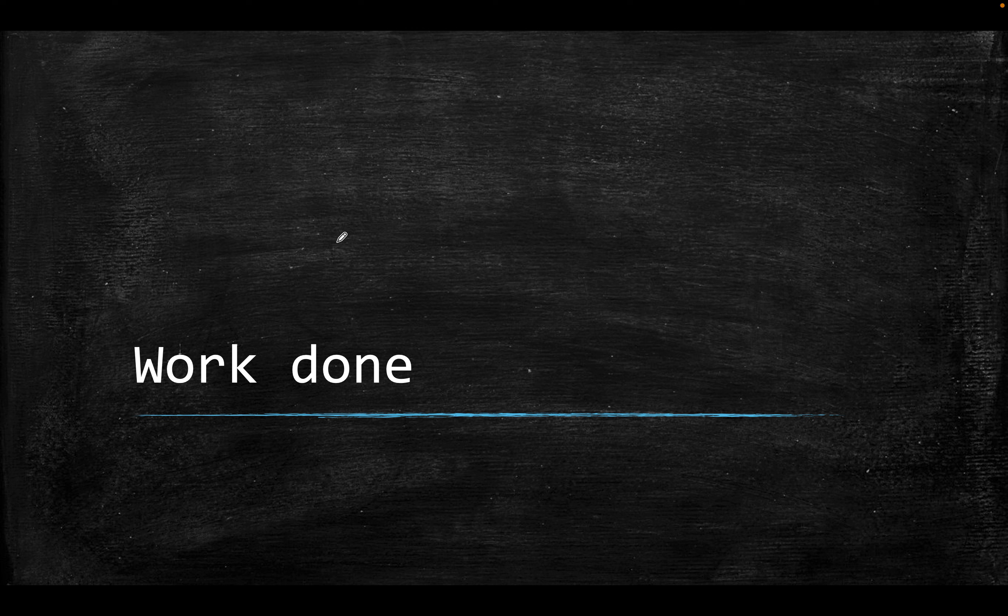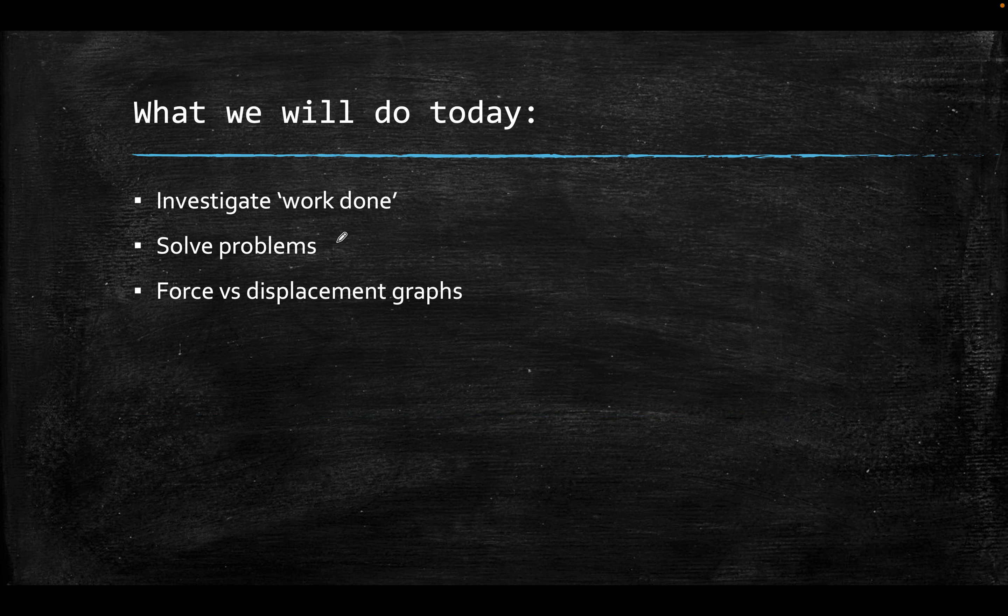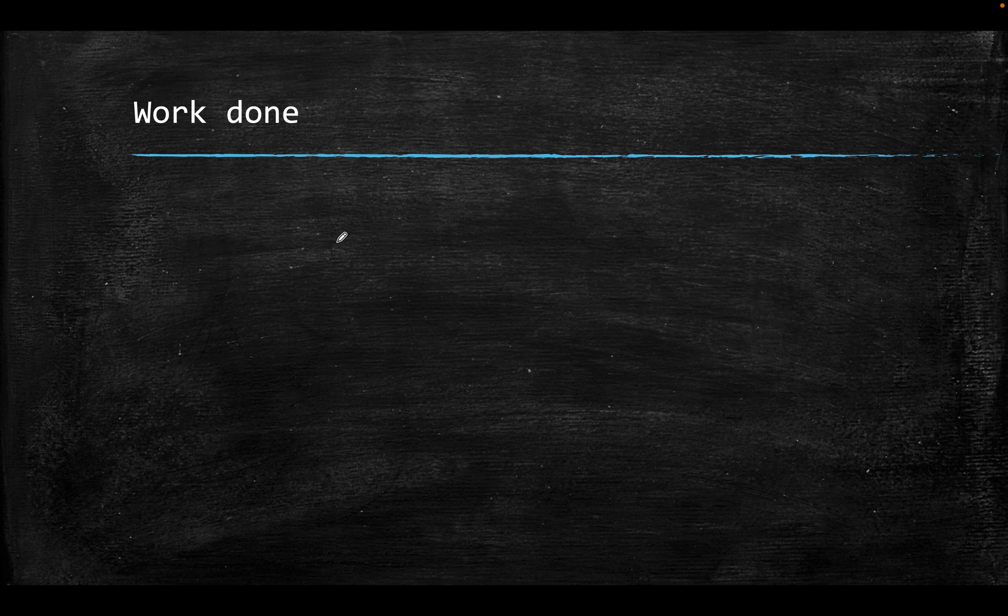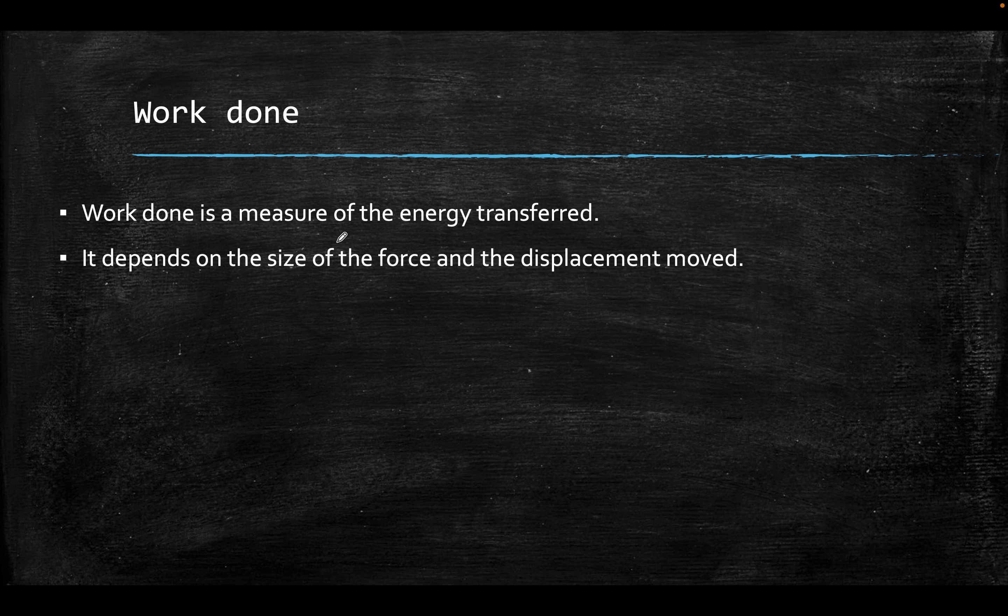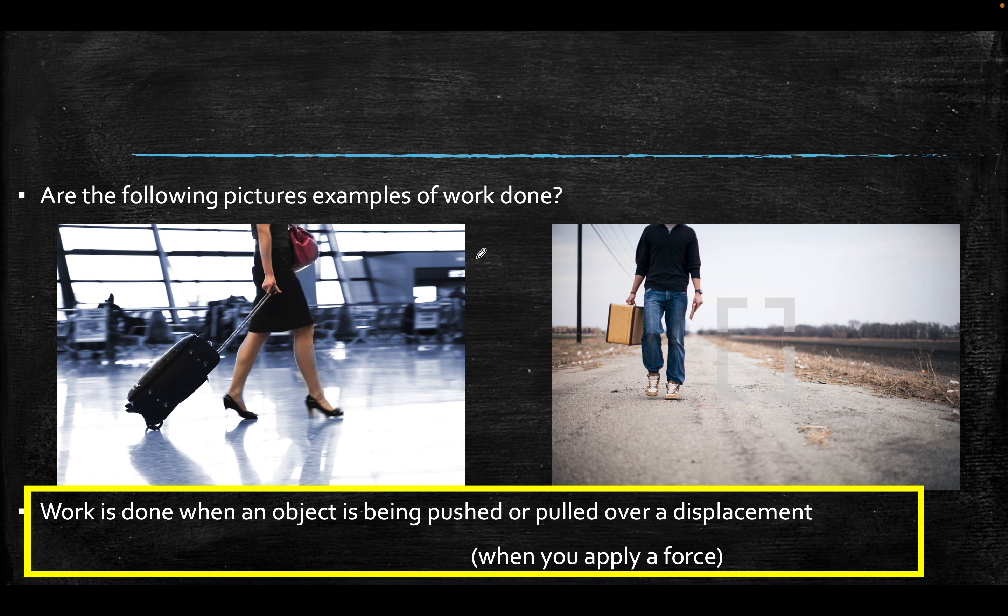In this lesson, we're going to look at work done. We're going to focus on investigating what this work is, solve some problems, and do some force versus displacement graphs. First of all, work is simply a measure of how much energy you've used. If you want to move something, you will use energy to do it. That is the work that you're going to do. If you use more force, you will do more work. If you can move it further, you've done more work. So it involves the force and the displacement it moves in.